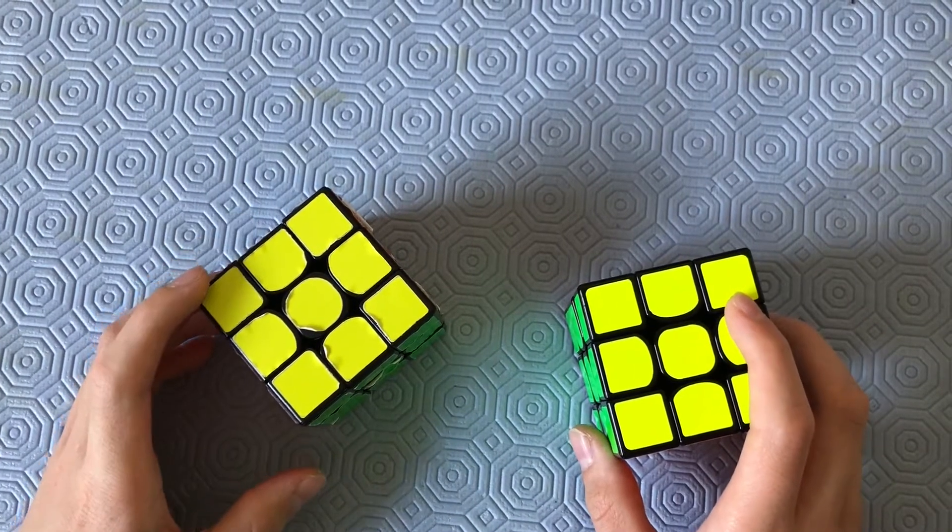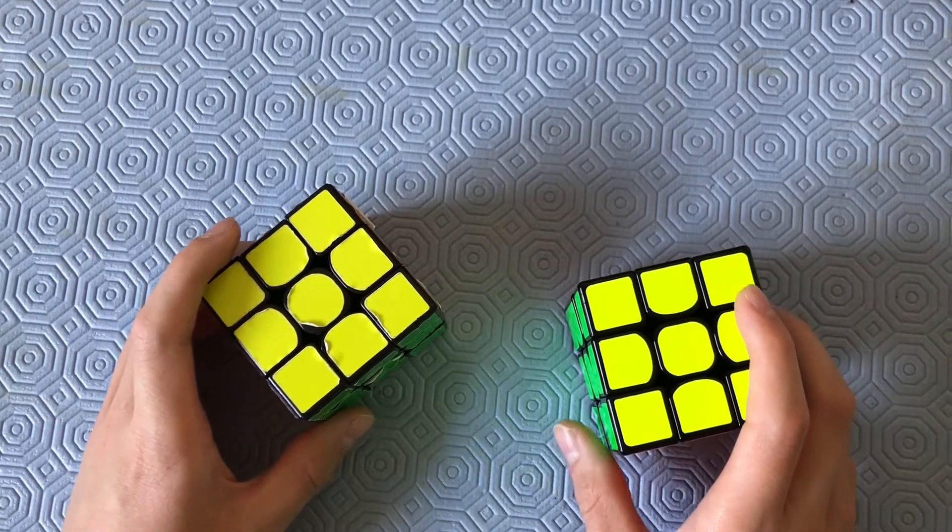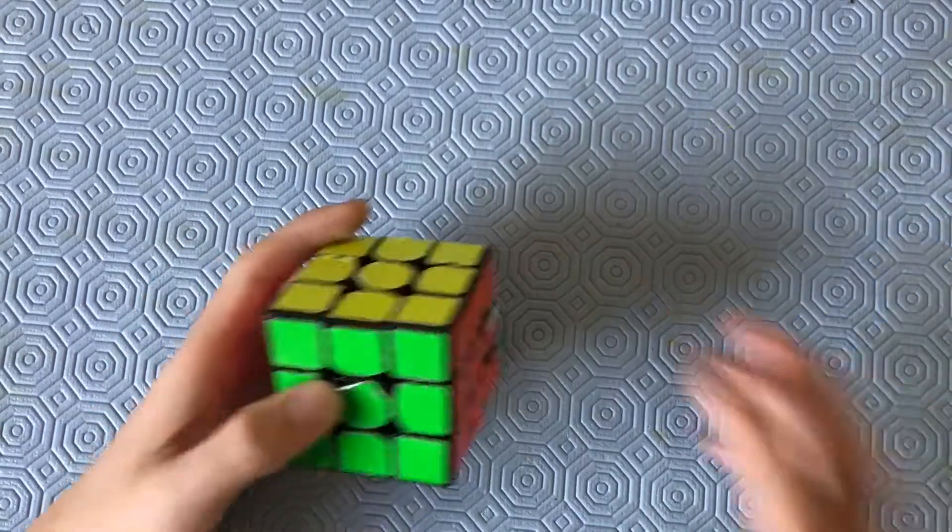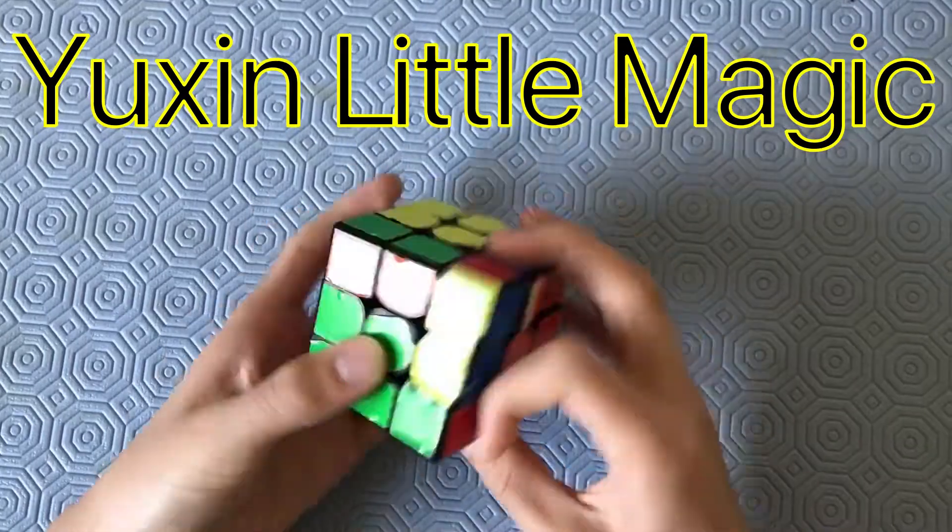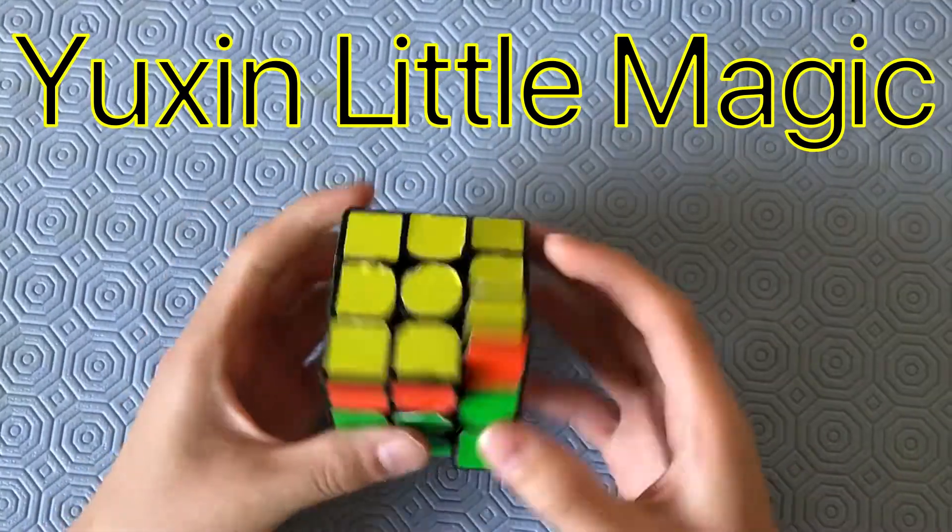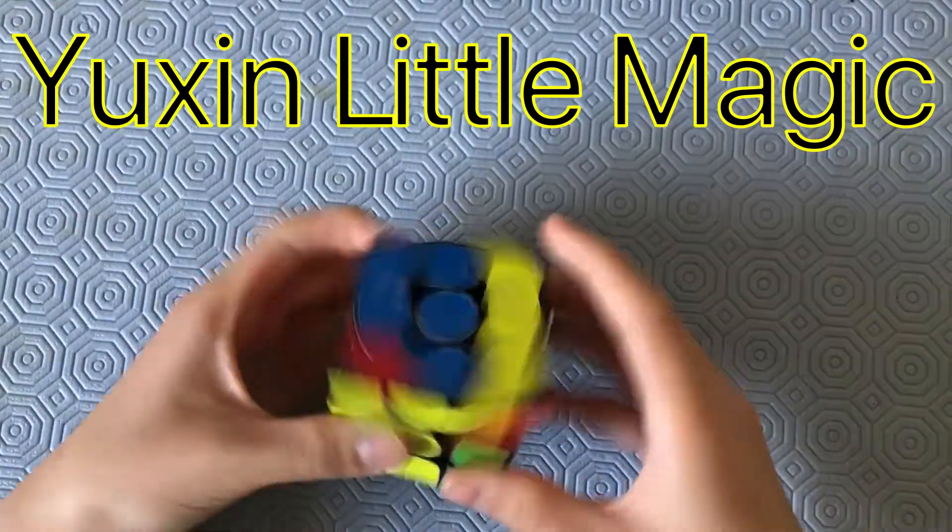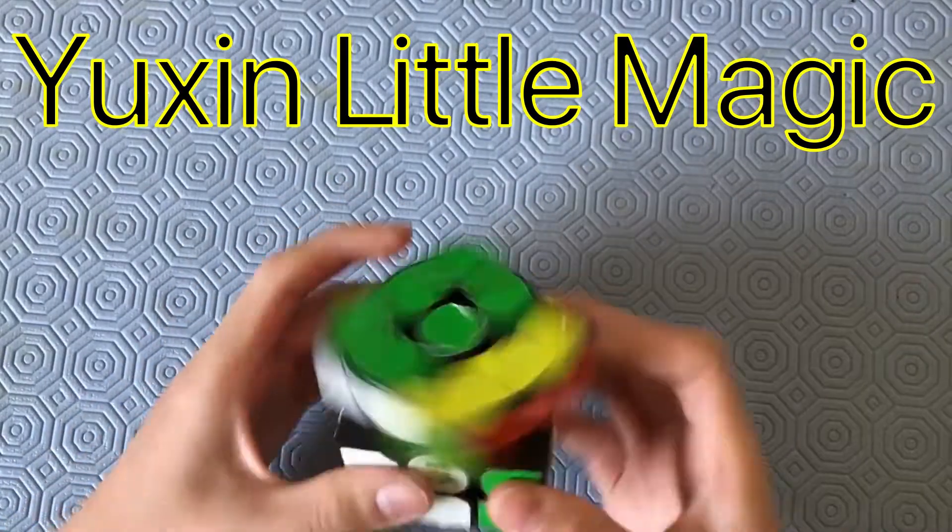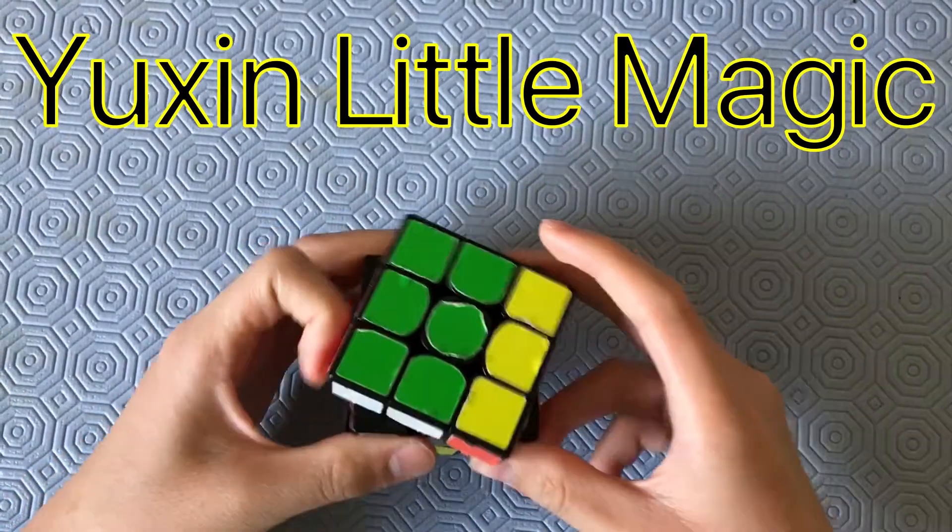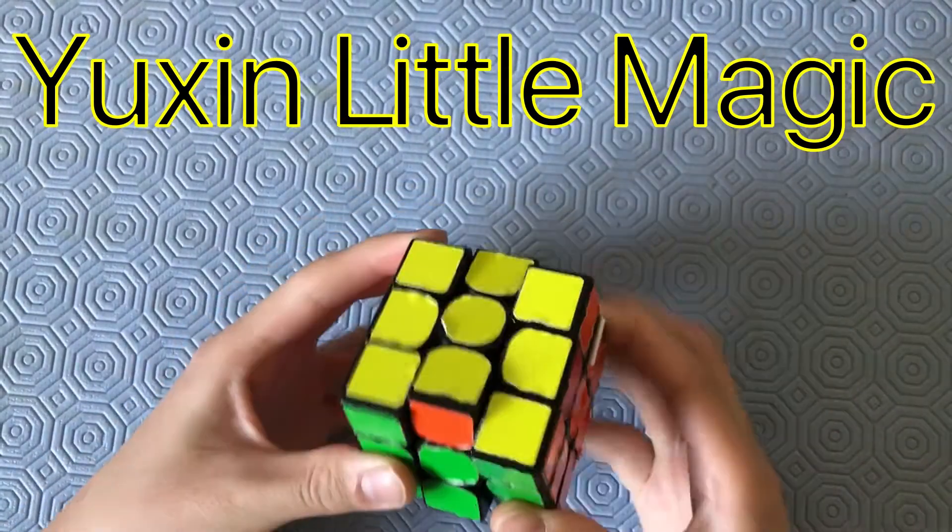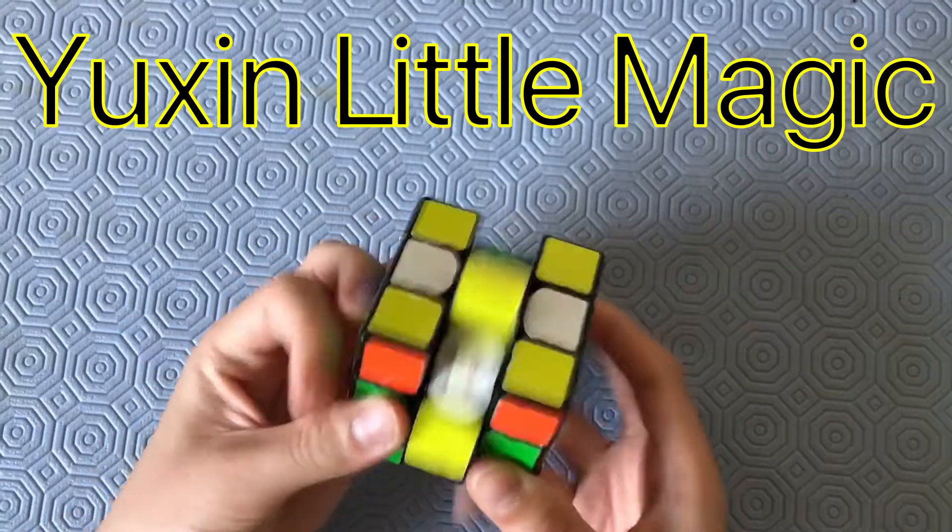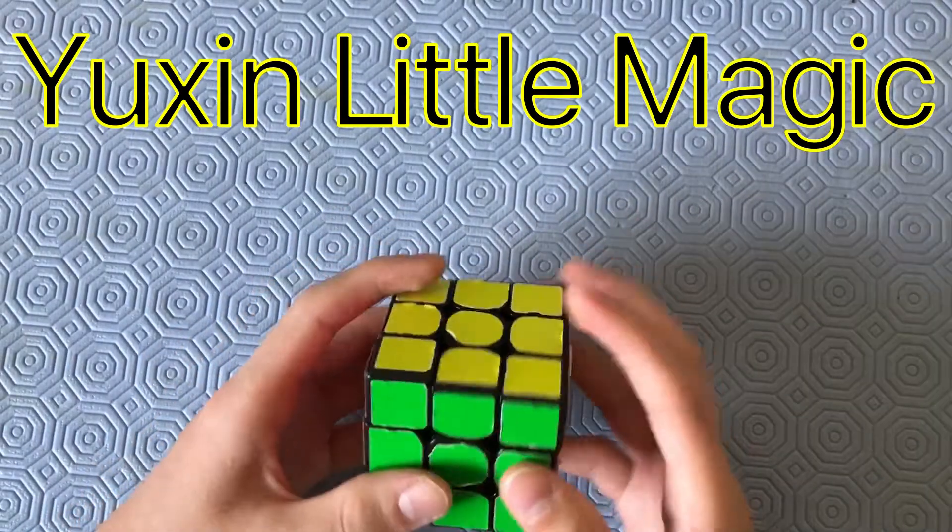Now, for turning. We're going to be testing it with some PLL. So, I'm going to start with the Yushin Little Magic. The Yushin Little Magic is very fast and smooth. It feels a little bit uncontrollable sometimes. But that could be due to the lack of magnets in it. The Valkyrie is a very stable cube though. So, the Yushin Little Magic might have problems with that.